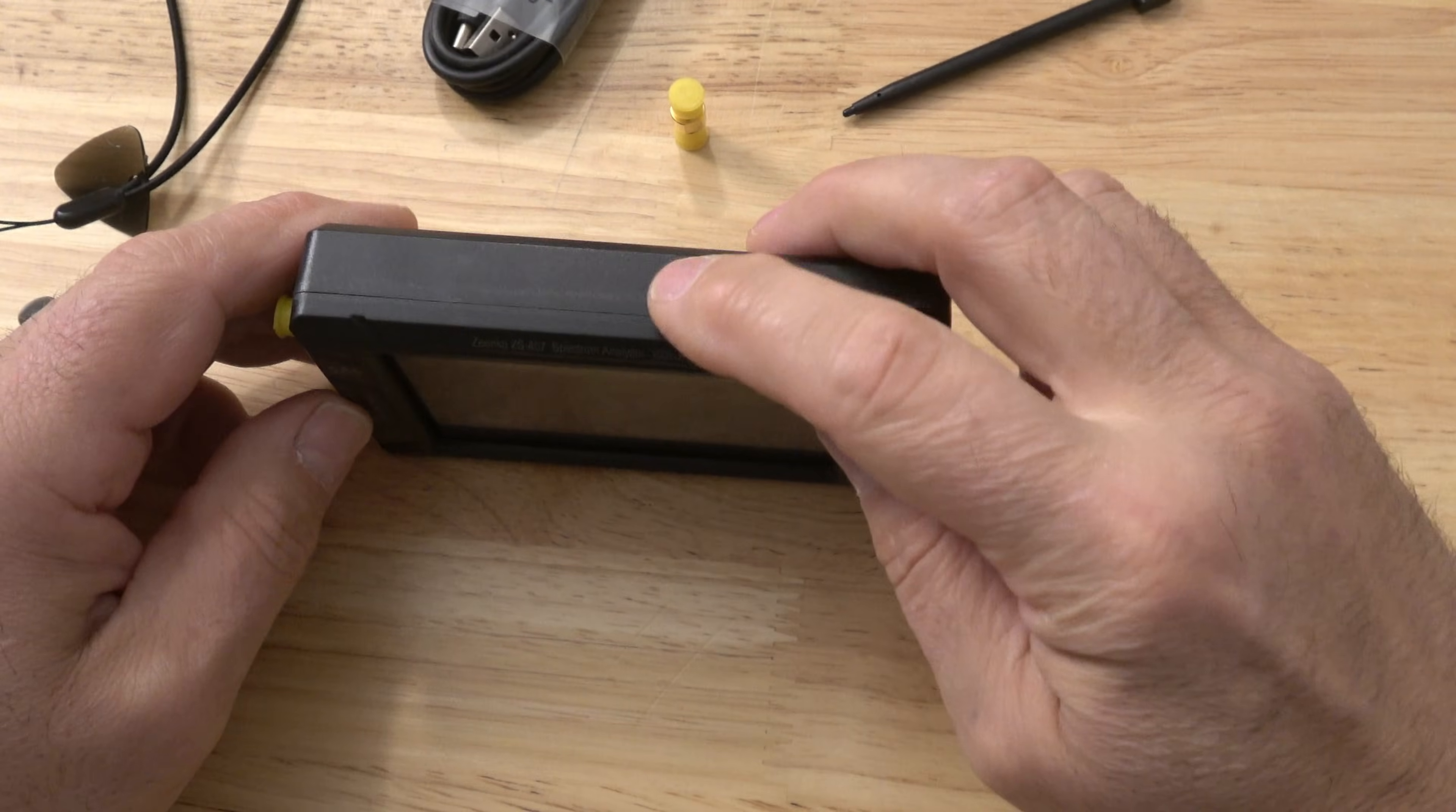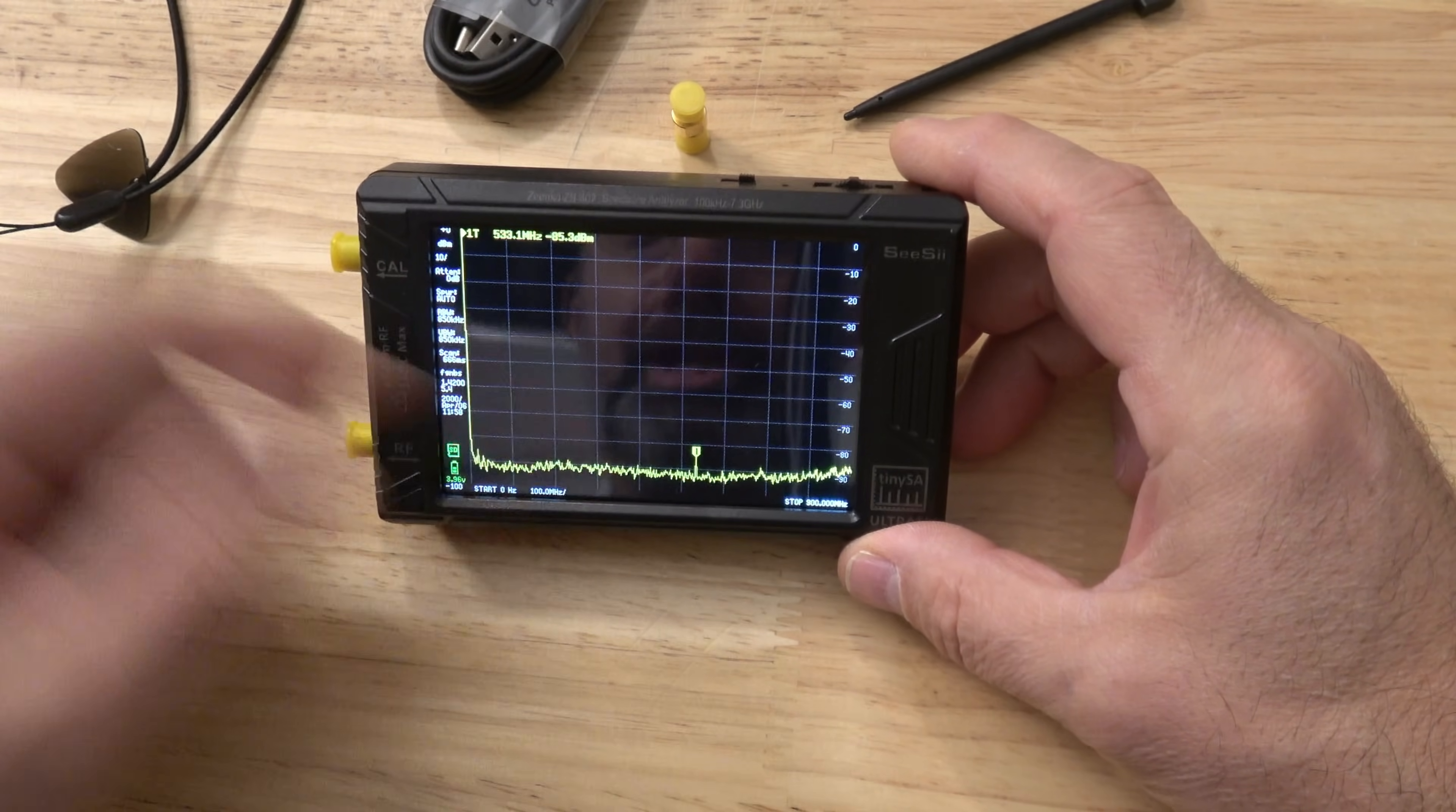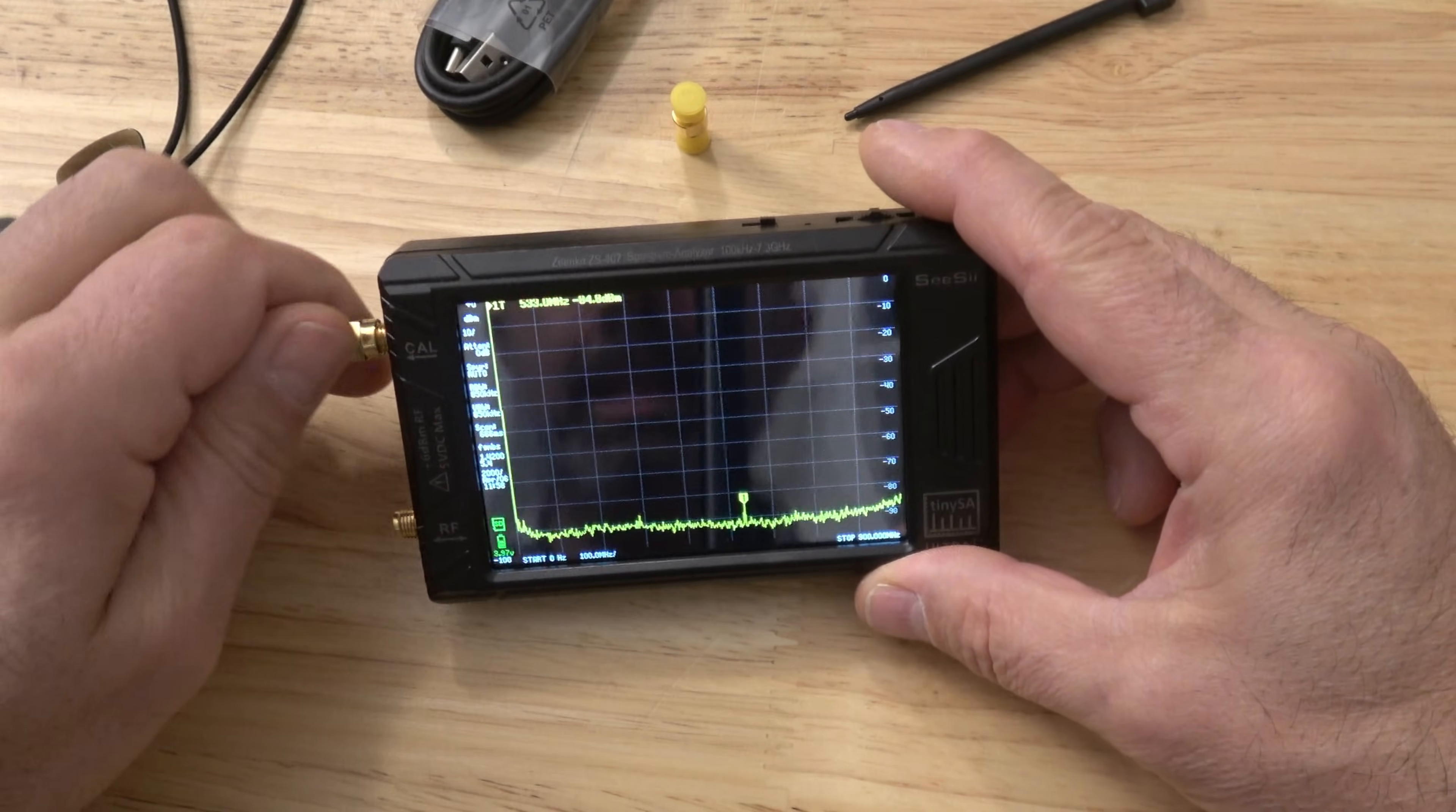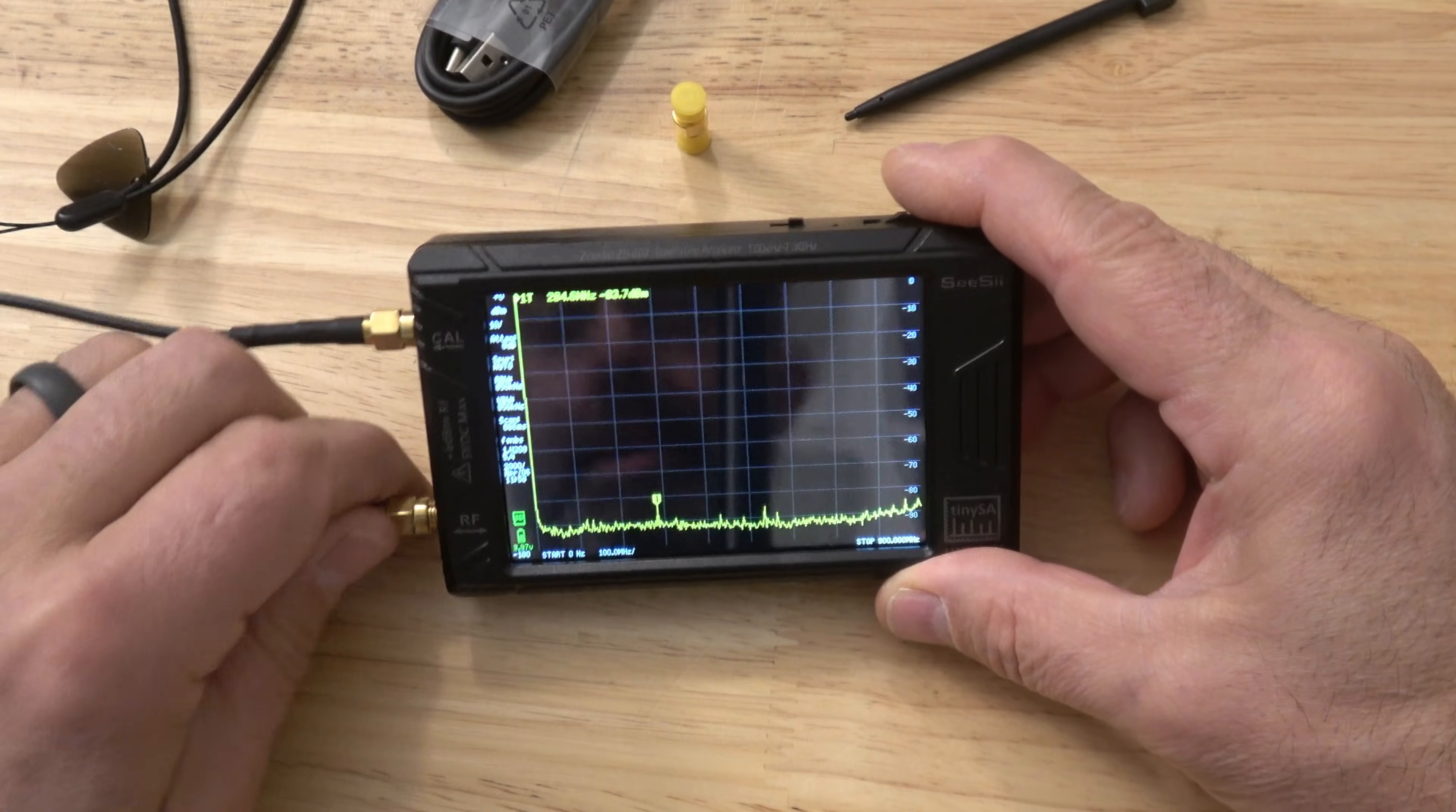All right. Well, here we are on the bench. Go ahead and turn it on. And it's very quick to boot, as you can see. And here we are. It's just checking out the noise floor. Now, it does recommend, before you do any kind of actual work with this thing, that you should do a self-calibration test. And to do that, we're just going to hook these cables together. And we're going to get into the menu system here.